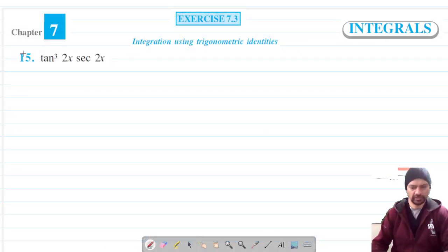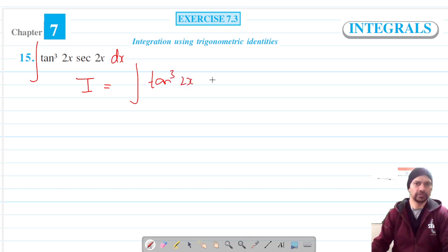Welcome to Pratham Science Academy classes and we are on to question number 15 of exercise 7.3. Let's say its integral is I and this is tan³(2x)·sec(2x)dx. Now this tan³ can be written as tan²(2x)·tan(x)·sec(2x)dx.